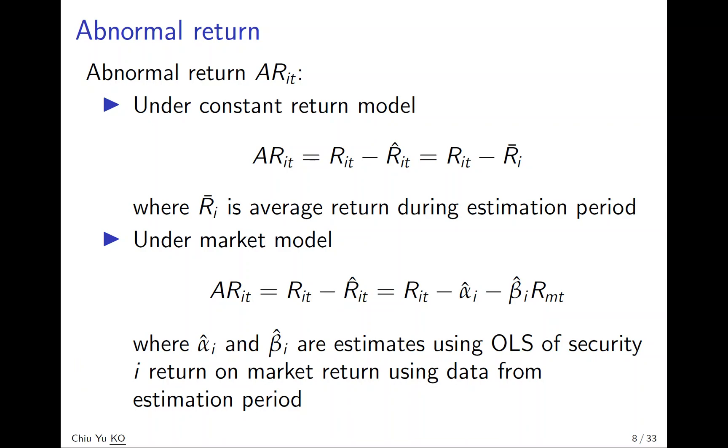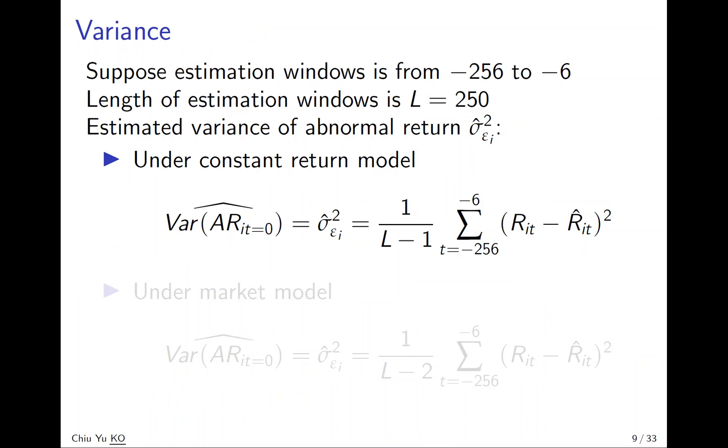Once we have the abnormal return, we can see the event impact, whether it's positive or negative. When abnormal return is positive, the event has a positive impact. But sometimes we want to see whether this positive is not from random chance but is real. We use hypothesis testing or confidence intervals to see whether the result is not from random events.